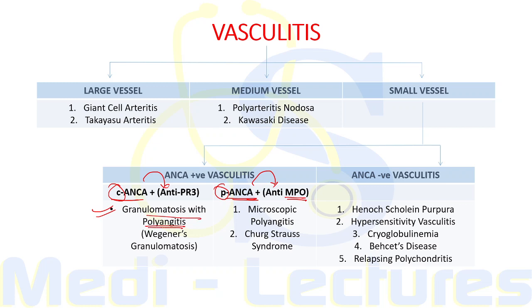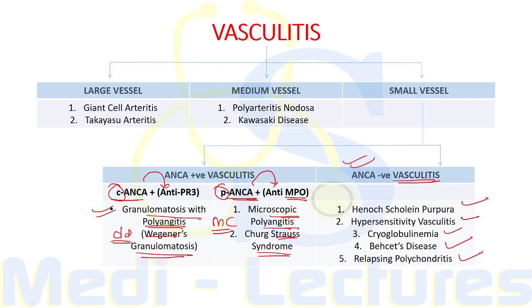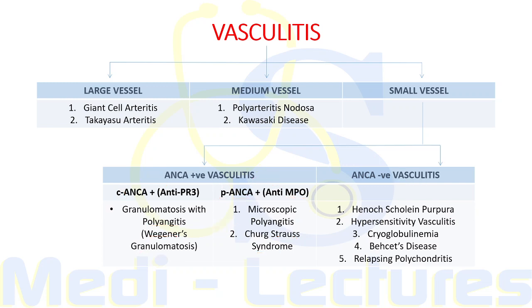C-ANCA positivity is seen with Granulomatosis with Polyangiitis, formerly known as Wegener's Granulomatosis. P-ANCA is associated with two conditions: Microscopic Polyangiitis and Churg-Strauss Syndrome, remembered by 'MC'. ANCA-negative vasculitis includes Henoch-Schönlein Purpura, Hypersensitivity Vasculitis, Cryoglobulinemia, Behcet's Disease, and Relapsing Polychondritis. This flowchart is very important and easy to remember.